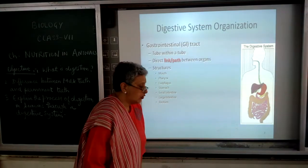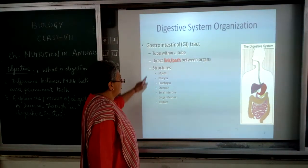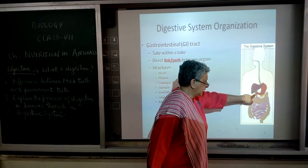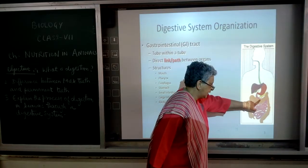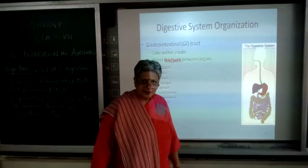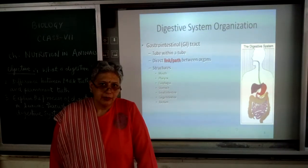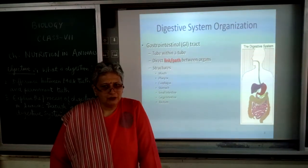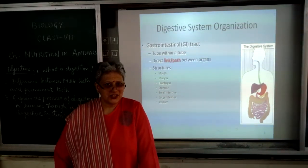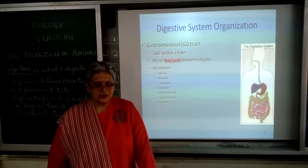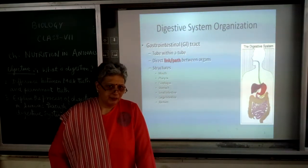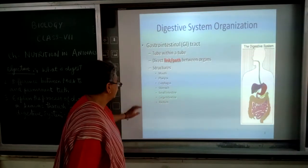This is also called a GI tract. This tract starts from the mouth and goes towards the stomach. Then there is the intestine - the small intestine, the large intestine - along with the pancreas, liver, and gallbladder. You did this digestive system in class 5 also, and every year there is an extension with more details. The structure includes the mouth, pharynx, esophagus, stomach, small intestine, large intestine, rectum, and finally the anus.